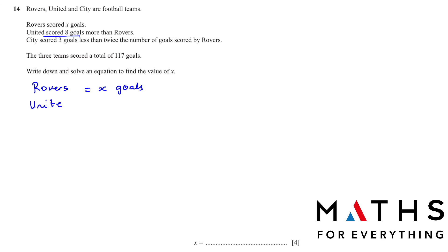And City scored three goals less than what? Twice the number of goals scored by Rovers. Twice the number of goals. Twice means multiply by two. So Rovers scored X goals. Twice will be two multiplied by X. And then from that less three goals. So two X minus three. The three teams scored a total of 117 goals. When you add all of them together you will get 117 goals.